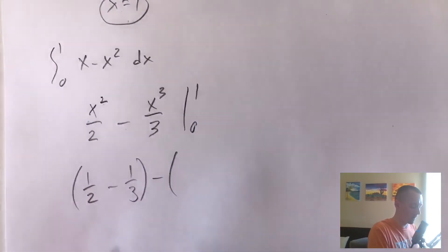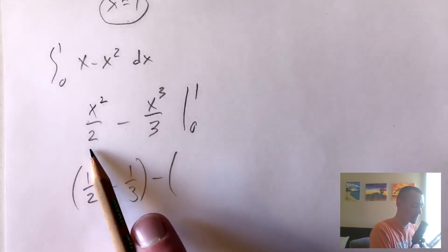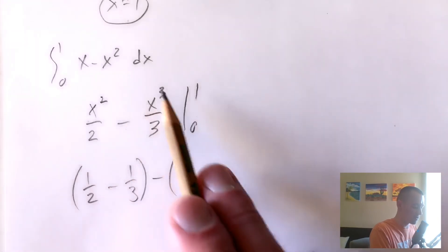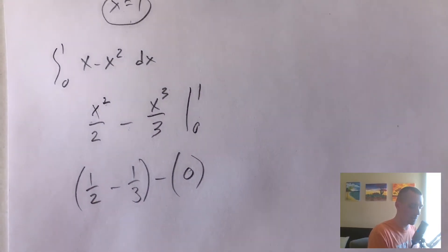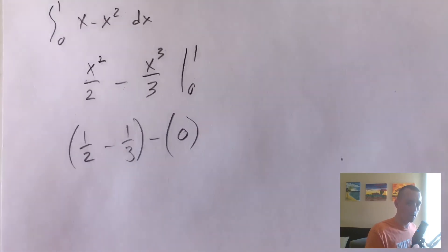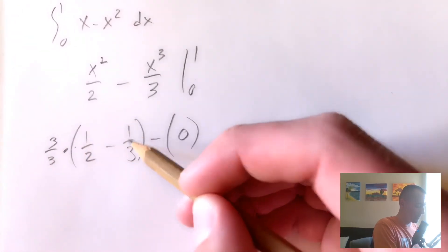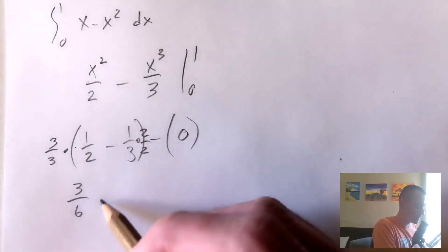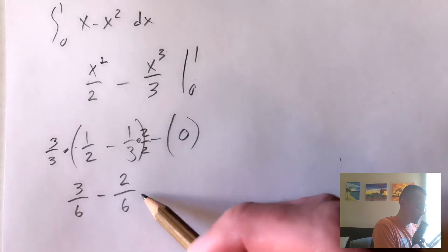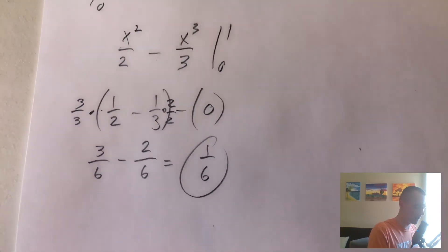Then we subtract what we get from plugging in zero. Zero squared over two is zero, minus zero cubed over three is still zero, so we get zero minus zero, which is zero. So we have one half minus one third. To combine these we get a common denominator: multiply one half by three over three and one third by two over two, giving three sixths minus two sixths, which equals one sixth.